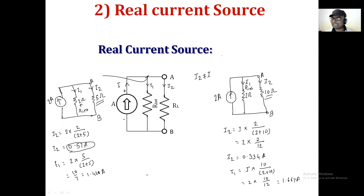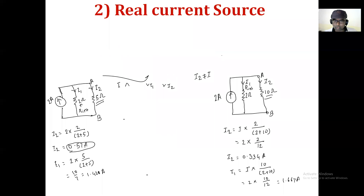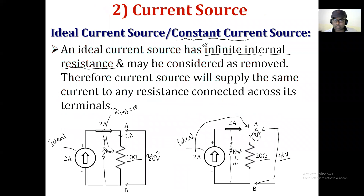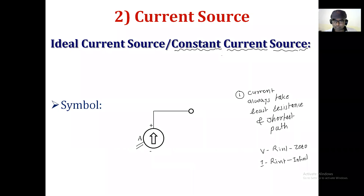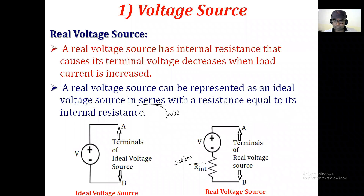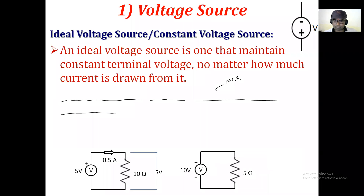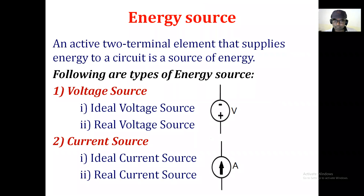With an ideal current source you will get constant current — that is the difference between the actual current source and the imaginary current source. Now it's my request to all students: please take note of these things for the real voltage source and the real current source. Take note of the slides here.